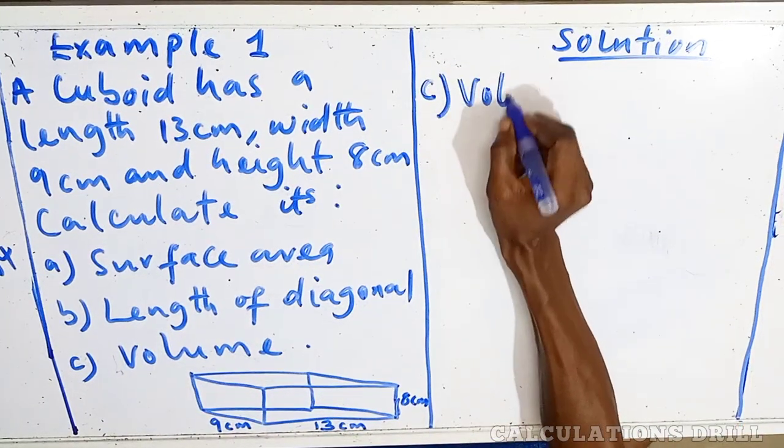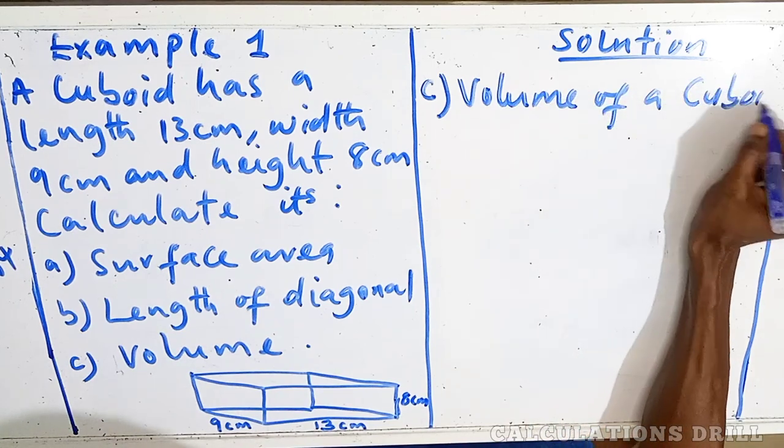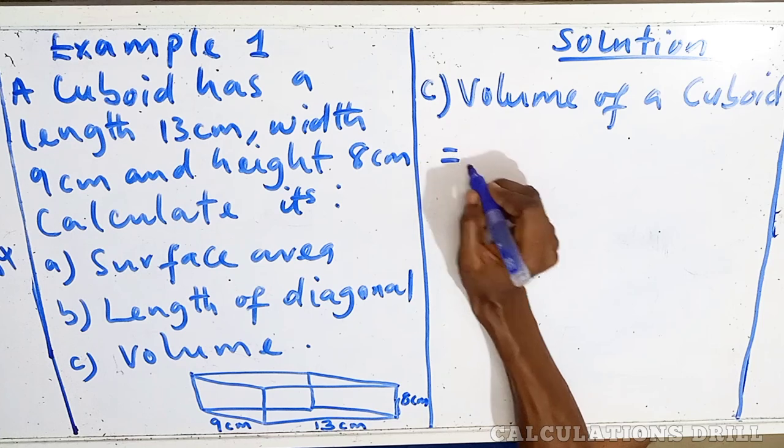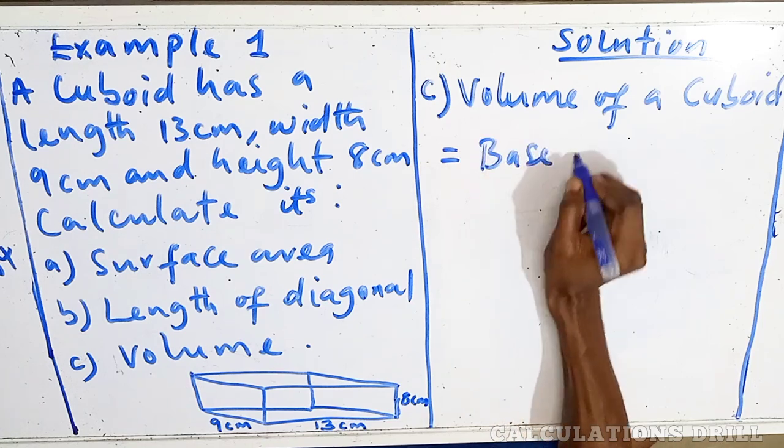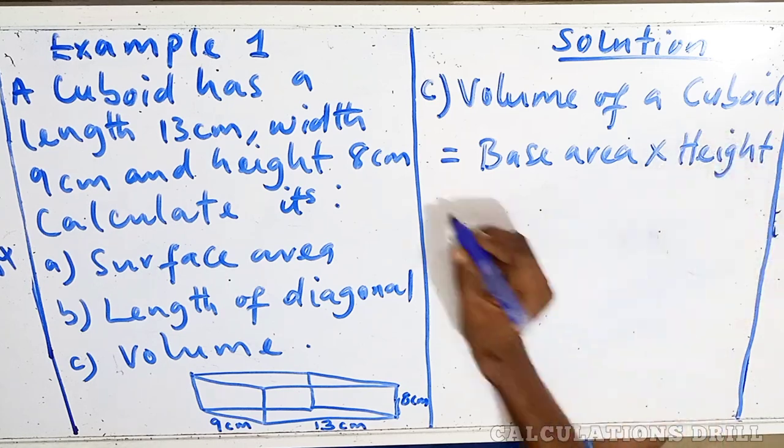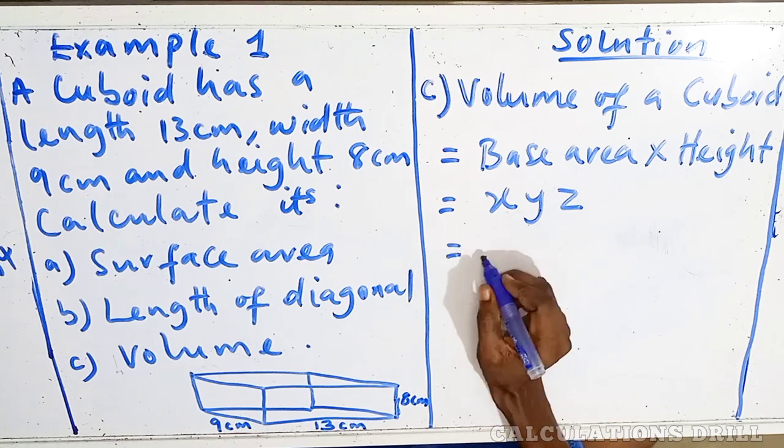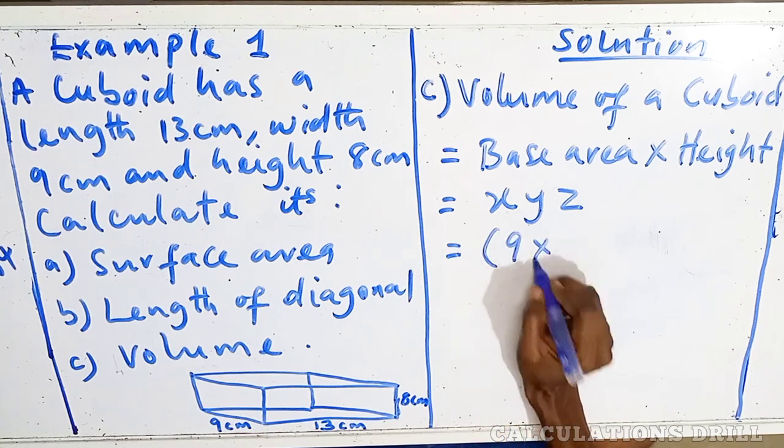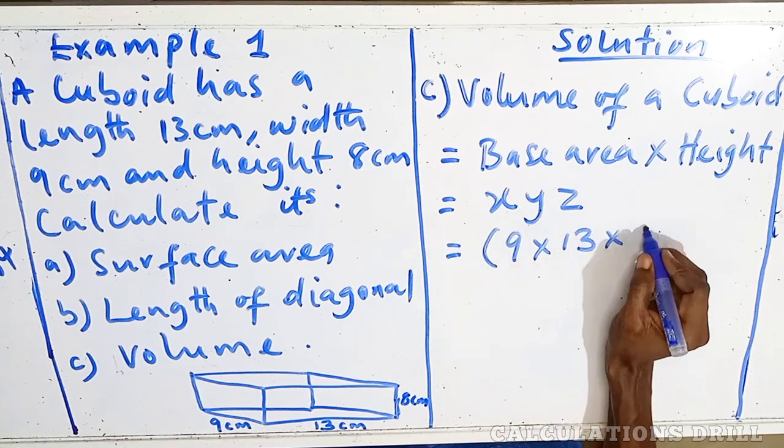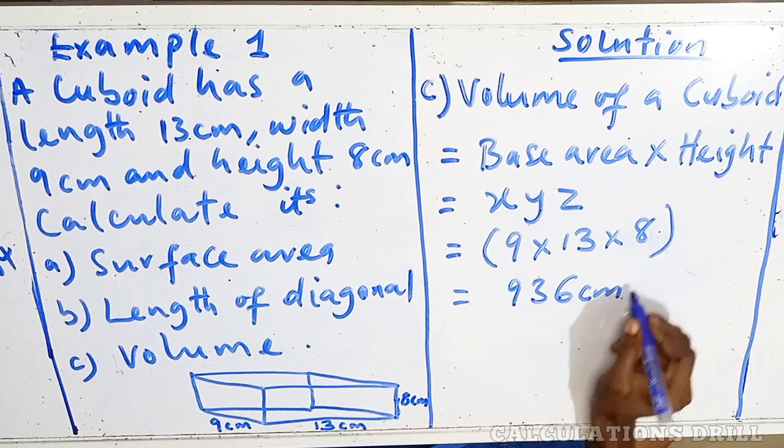The c we are solving for is the volume of a cuboid equals to base area times height equals to x, y, z is equals to 9 times 13 times 8. Then, when we multiply it, that will give us 936 cm³.